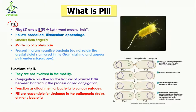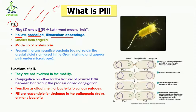Pili comes from the Latin word which means hair. The pili are actually hollow, non-helical, filamentous appendages. Hollow means that the internal part is hollow and does not contain anything. Non-helical means that they are straight structures. Filamentous means that they are small structures like filaments, and they are appendages, meaning they are like legs for unicellular organisms.